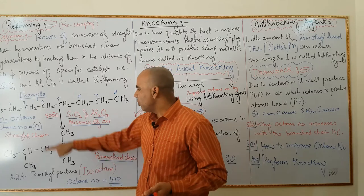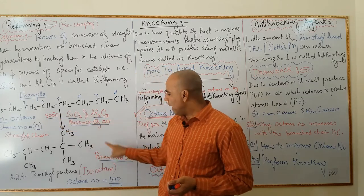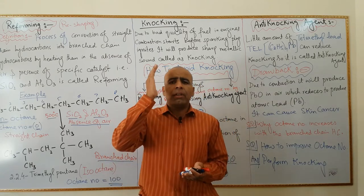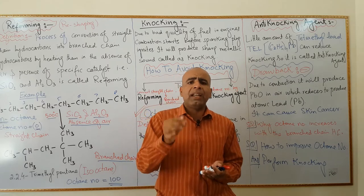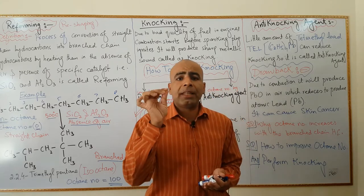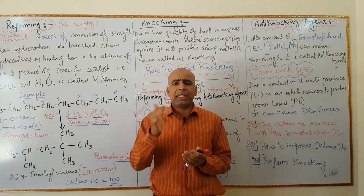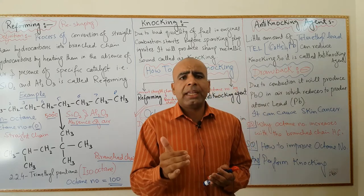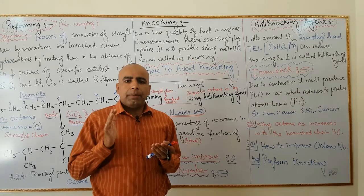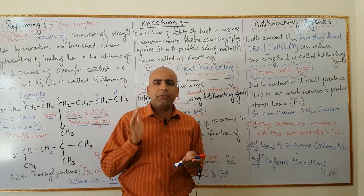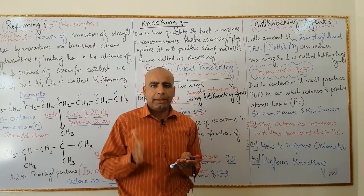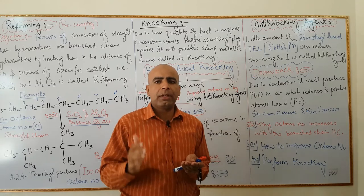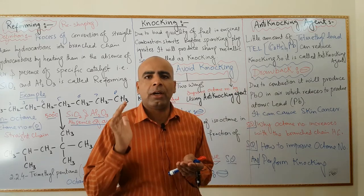If the amount of iso-octane in petrol is more, then that petrol has a higher octane number. Straight chain n-octane has zero octane number while iso-octane has 100 octane number. In Pakistan the available petrol has octane number 92, while in Saudi Arabia it is 96. If the octane number of fuel is greater, the quality of fuel is better and the fuel will combust smoothly in the engine.